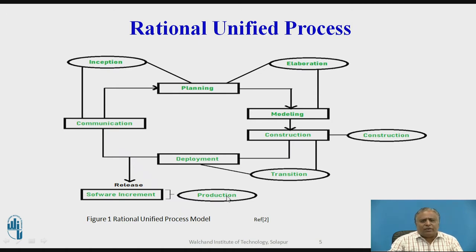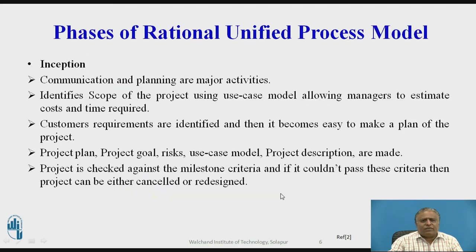This is the block diagram of Rational Unified Process. The phases of Rational Unified Process model are: the first phase is Inception phase. In this, communication and planning are the major activities. It identifies the scope of the project using use case model, allowing managers to estimate cost and time required. Customers' requirements are identified, and then it becomes easy to make a project plan, project goal, risk use case model, and project description. The project is checked against the Milestone criteria, and if it couldn't pass this criteria, then the project can be either cancelled or redesigned.